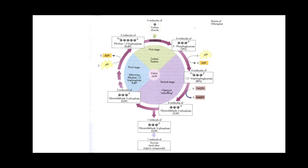One important note: the conversion of glyceraldehyde-3-phosphate into the desired sugar is actually the reverse of glycolysis — a process you will study in the chapter on respiration. At that point you will learn the intermediate steps involved. In summary, this is the Calvin cycle, also called the C3 cycle, and it takes place within the stroma of the chloroplast.